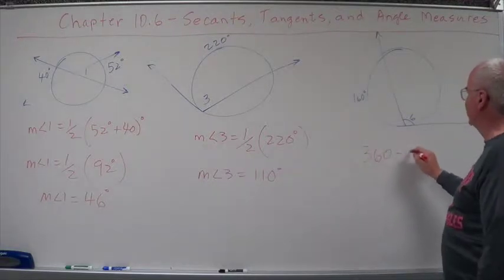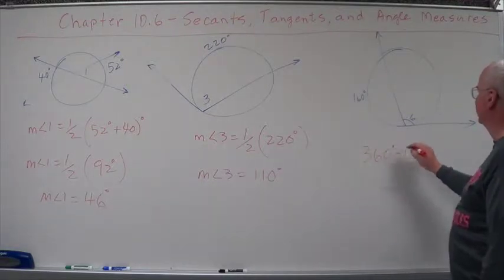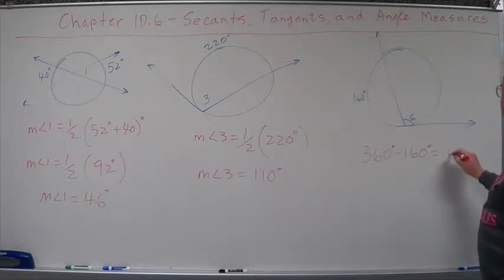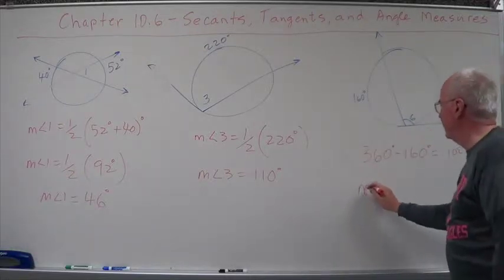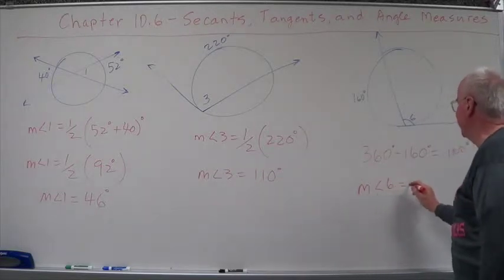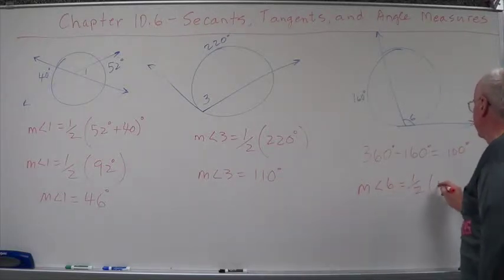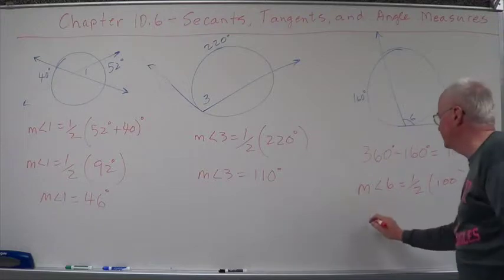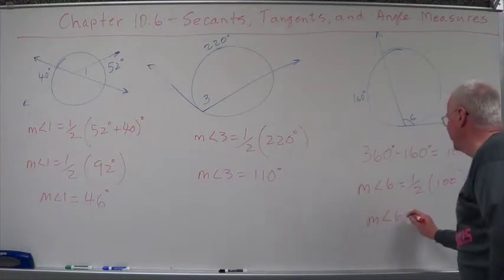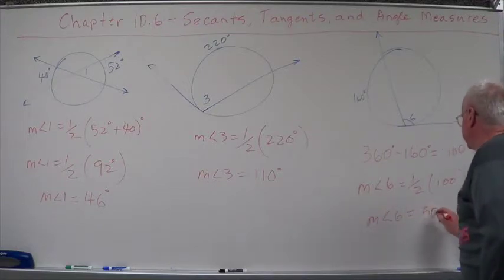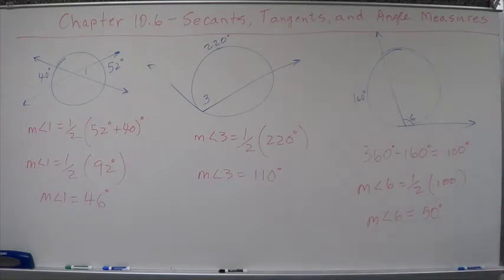360 minus 160 equals 200. So measure of angle six equals one half of 100. So measure of angle six equals 50 degrees. Real simple, straightforward samples there.